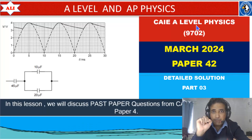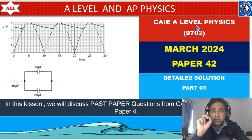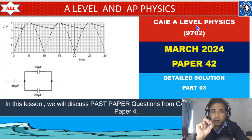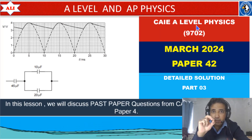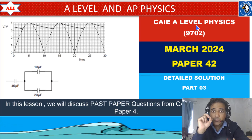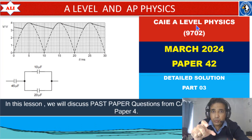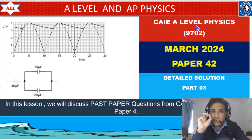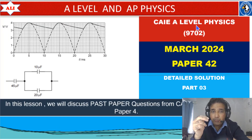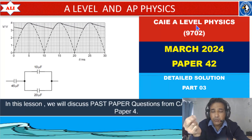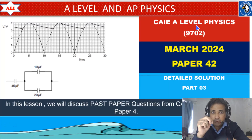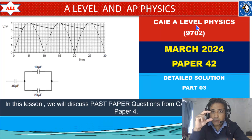The second step is understanding of physics. Look at the question based on given data and what you need to find, then use the relevant physics. After that, use algebra to simplify, and finally do the arithmetic — basic calculations to find the answer. Physics is just one part of the process.